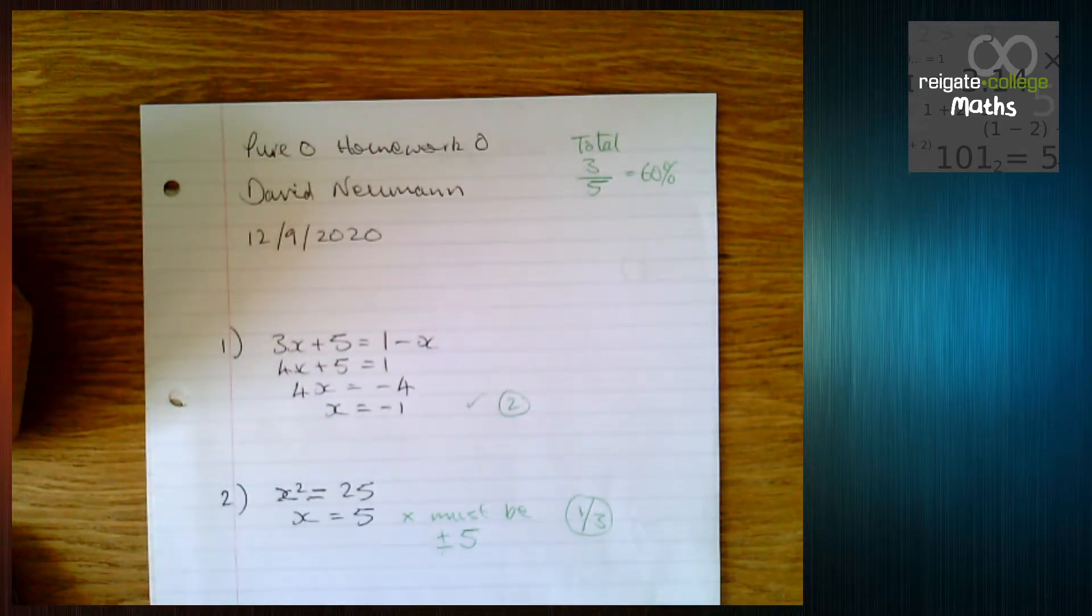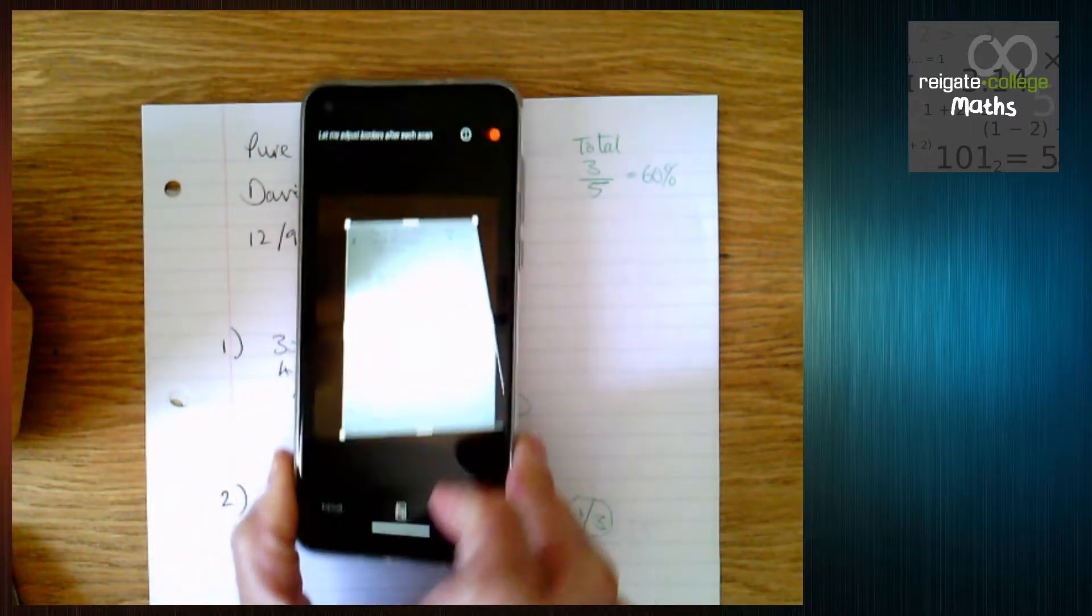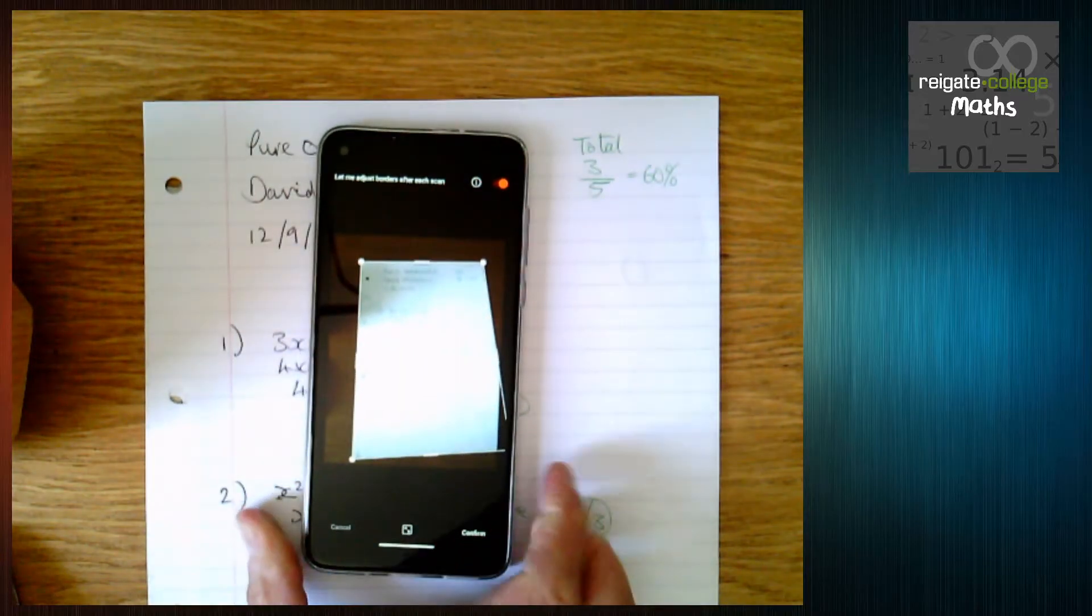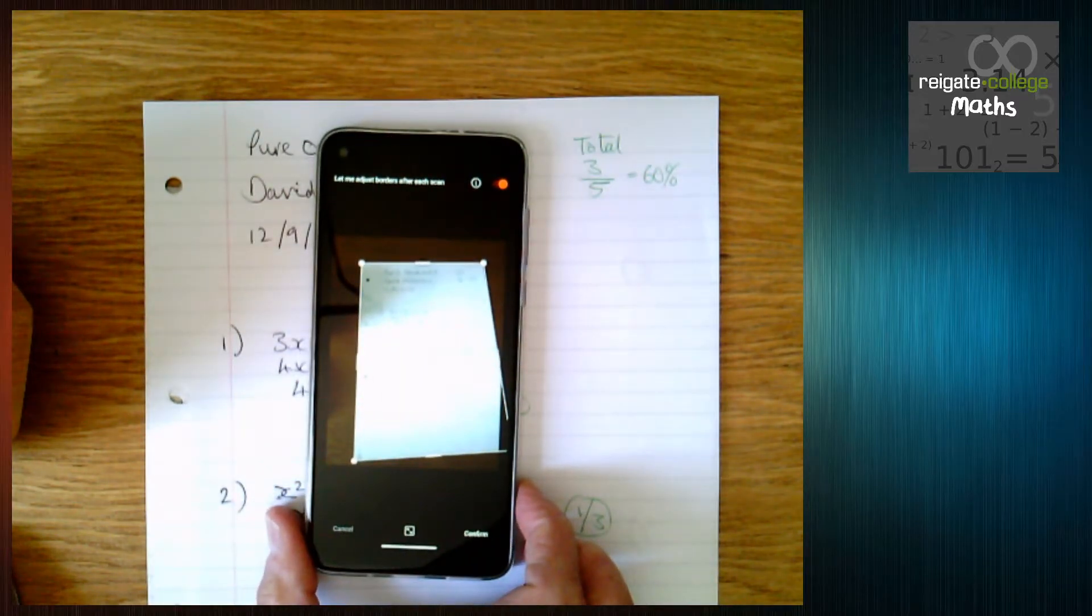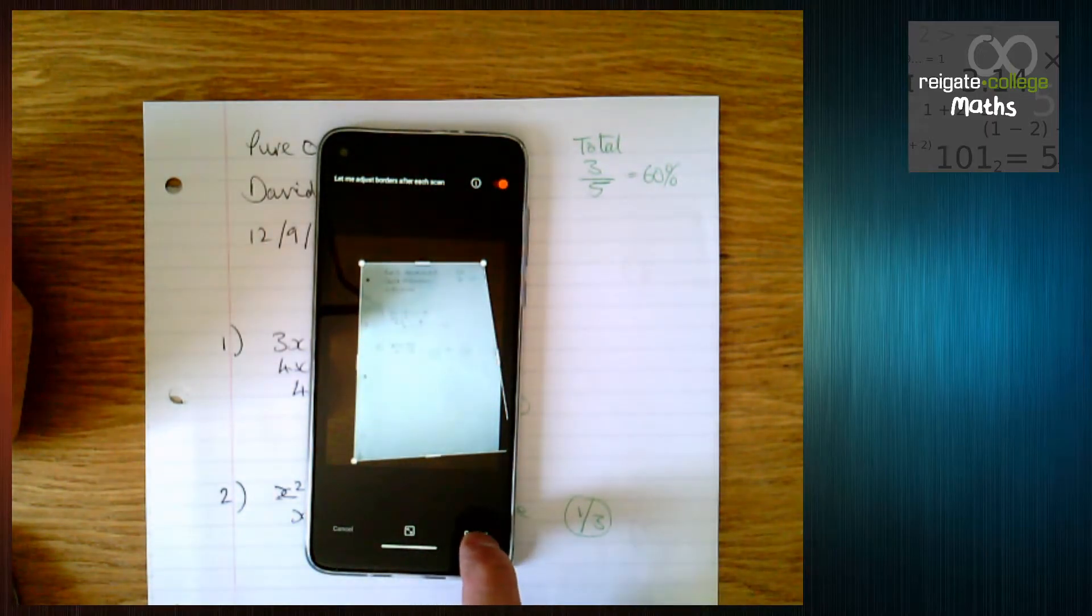When I do this, I'm going to take it out of camera shot. I can see the page with an orange box around it. I click the capture button and I get something looking like this. So there's my page of working and Office Lens is turning it into a full page again. I'm going to click confirm on that.